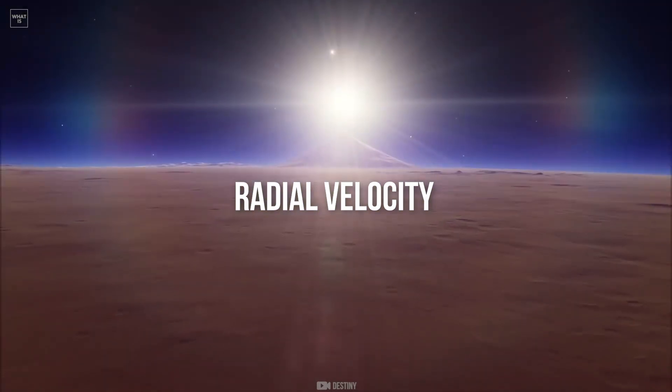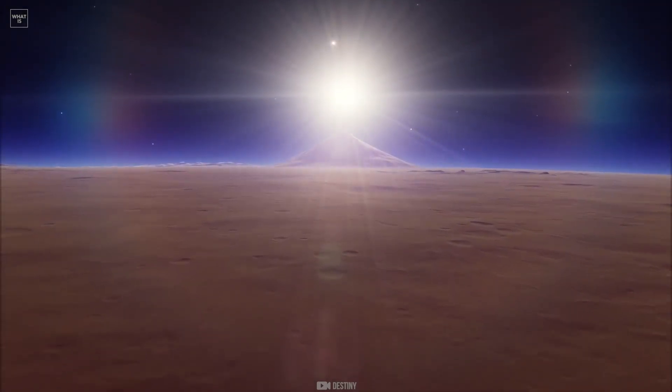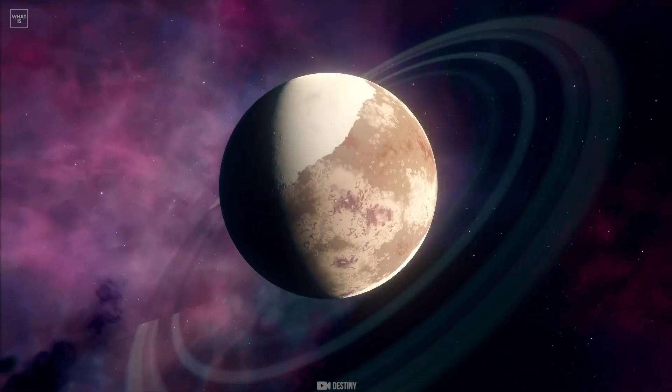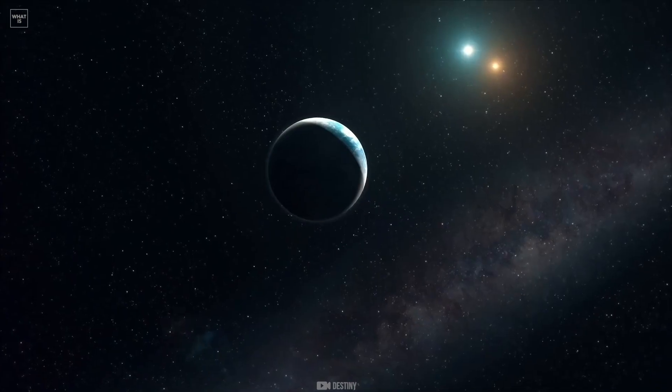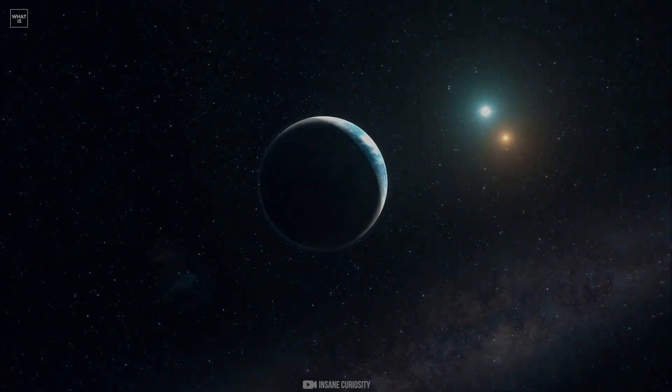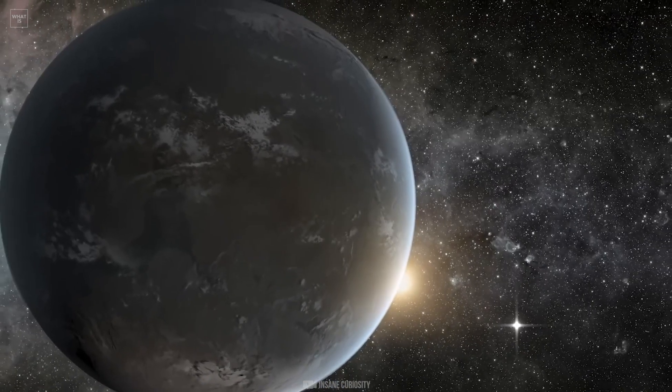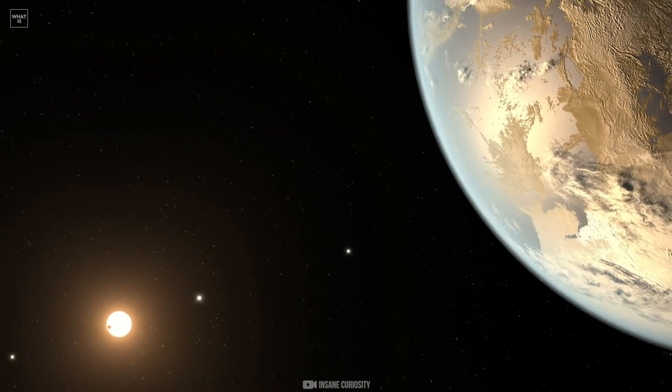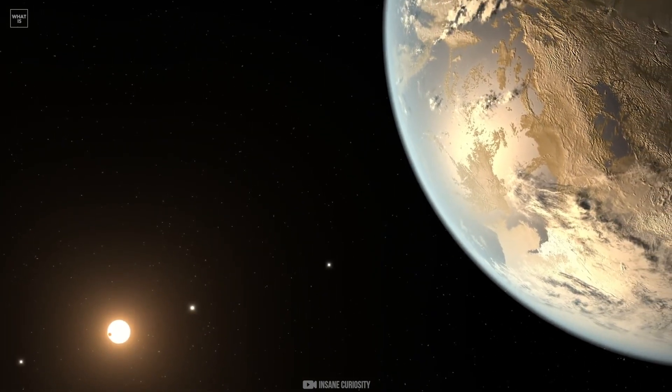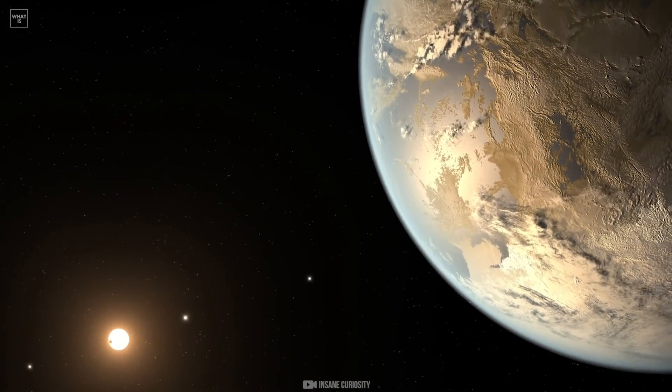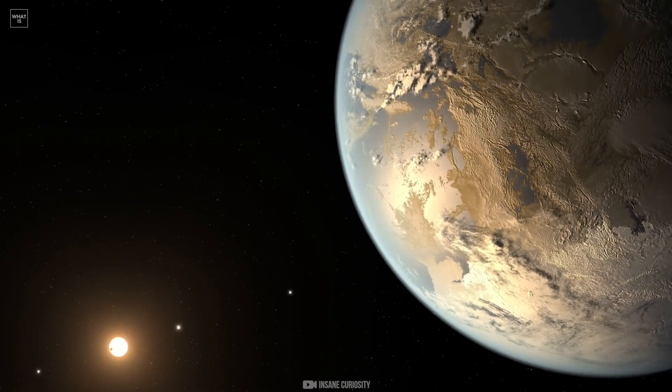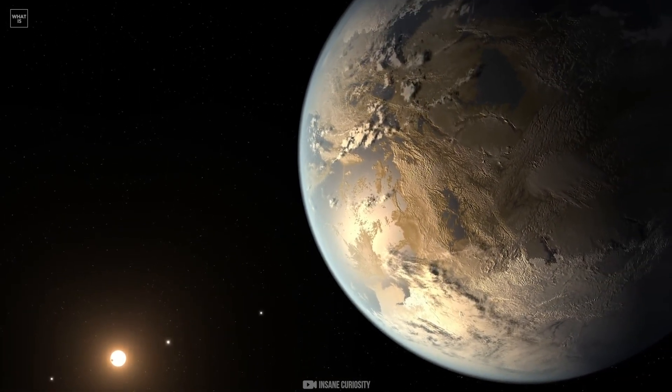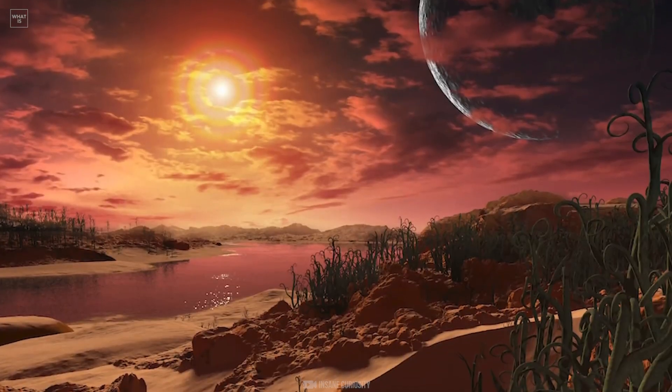Radial velocity: A planet and its star revolve around a common center of mass. Not only the planet moves in an elliptical orbit, but also the star. Although the orbit of the latter, of course, is much smaller, and it moves more slowly due to the difference in masses. If the planet is massive enough and close enough to its star, this motion can be detected.